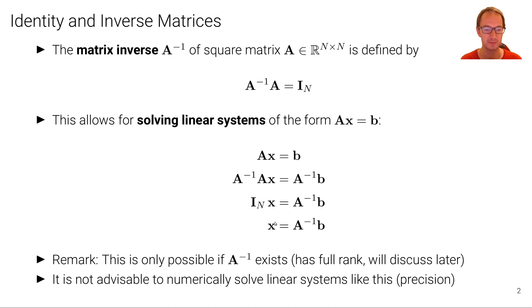Another remark is that while this is mathematically correct, it is not advisable to numerically solve linear systems like this, to solve numerical systems by first computing explicitly the inverse and then multiplying this with the vector b, because that is numerically instable. And it's better to use a proper decomposition or elimination technique that uses pivoting, and that's more stable.